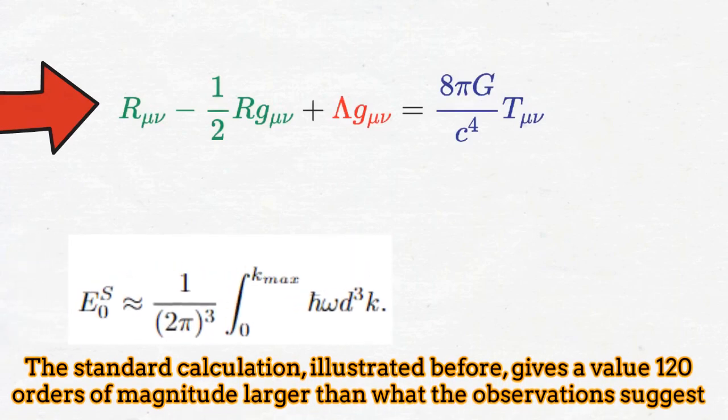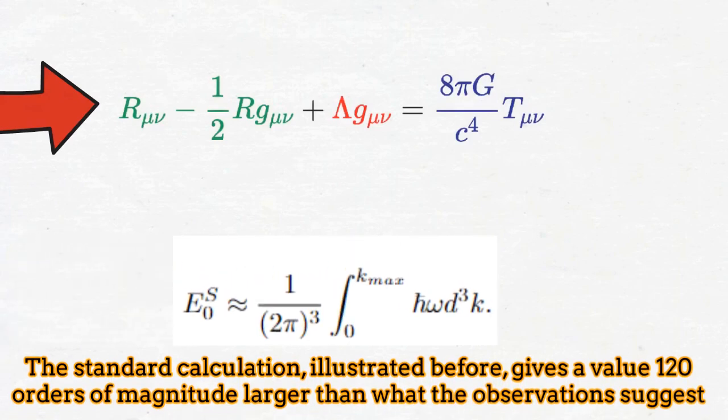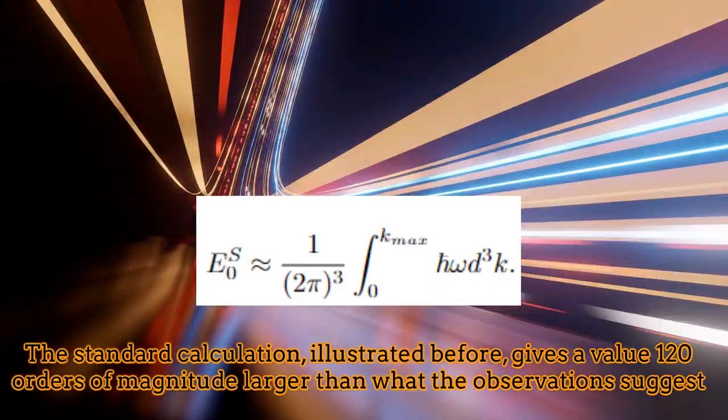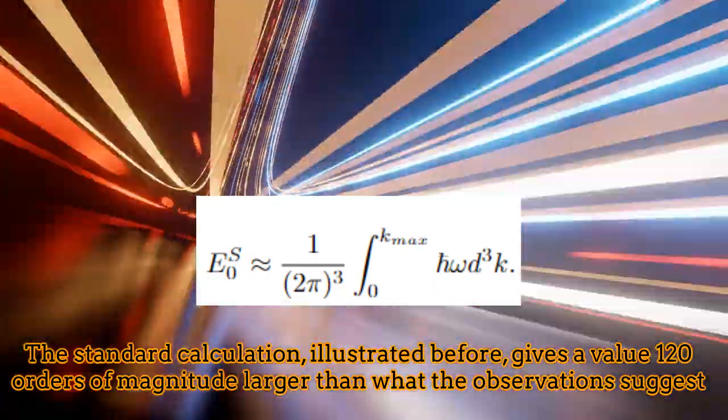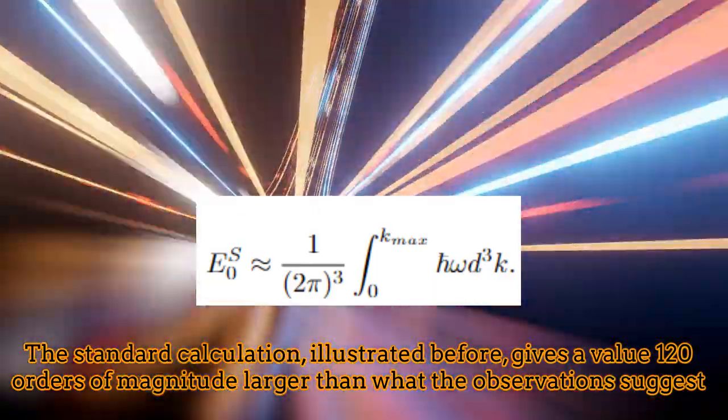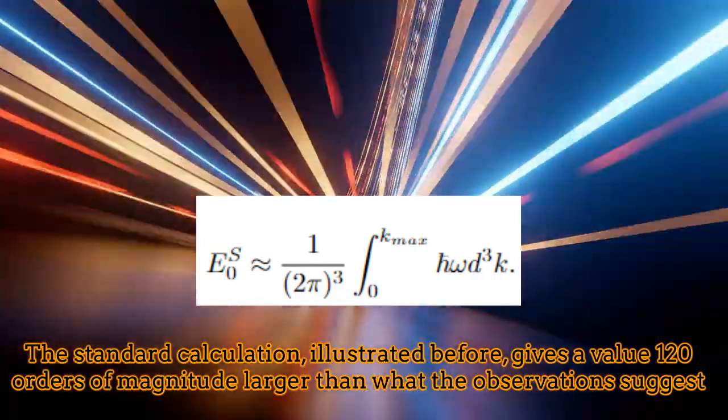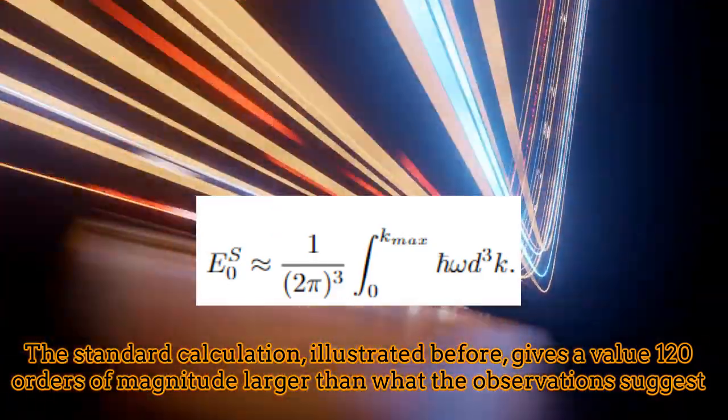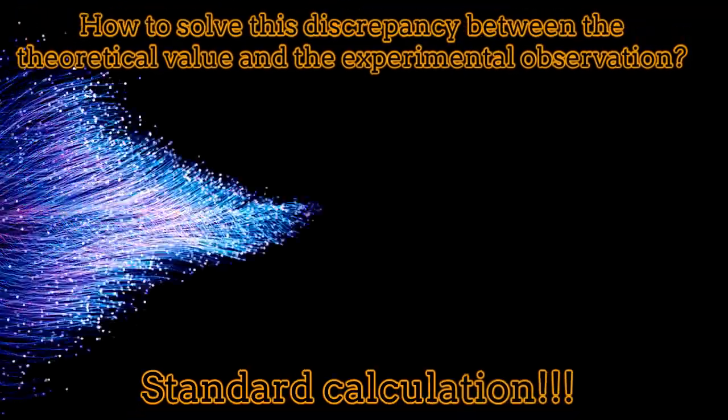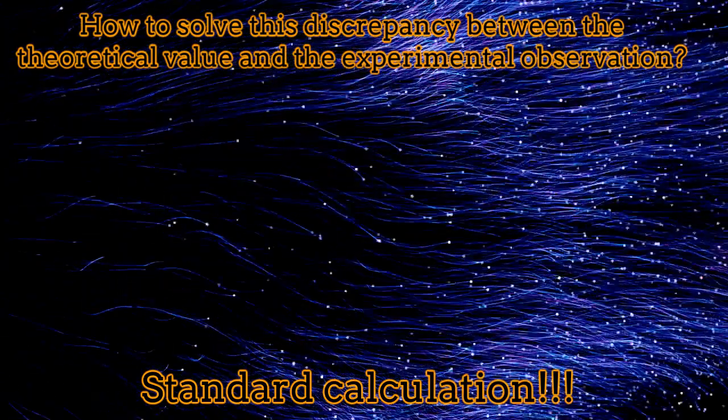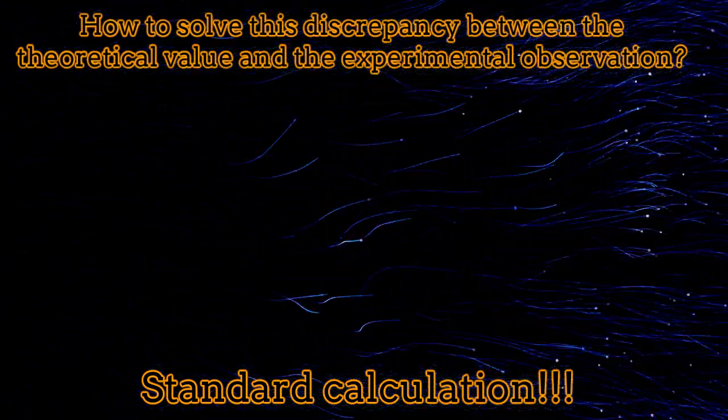The vacuum energy density, represented by the cosmological constant and calculated as explained before, integrating over all the possible frequency modes, reproduces the wrong result, which is 120 orders of magnitude larger than what is normally observed. This comes out after imposing an ultraviolet cutoff. Well then, how to solve this discrepancy between the theoretical value and the experimental observations?